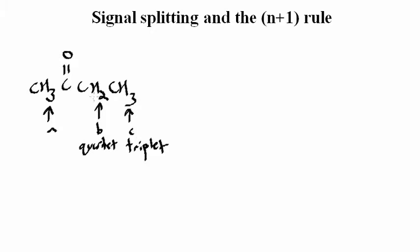The signal attributed to the B hydrogens is going to be a quartet. And then, we'll also have a singlet for these three hydrogens, labeled as A. The integrated signal area will have a ratio of 3 for the singlet to 2 for the quartet to 3 for this triplet.